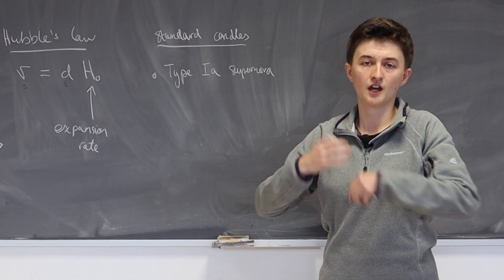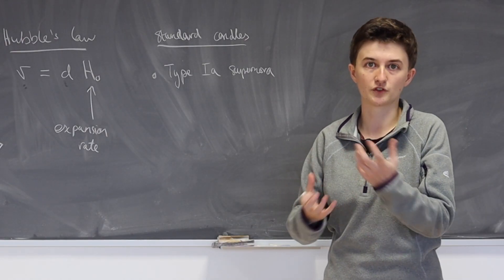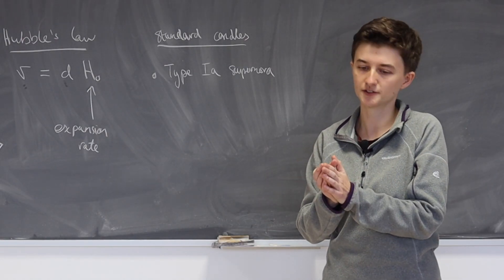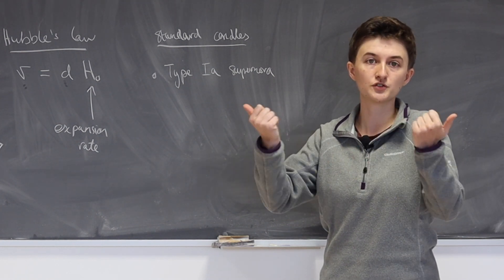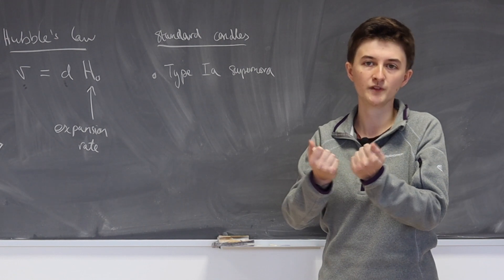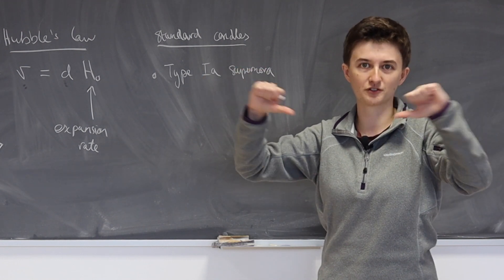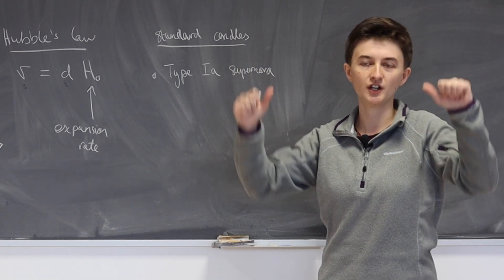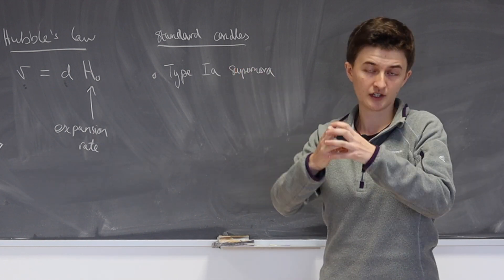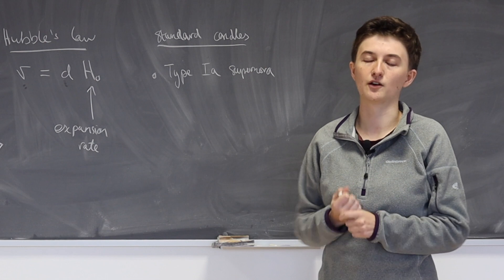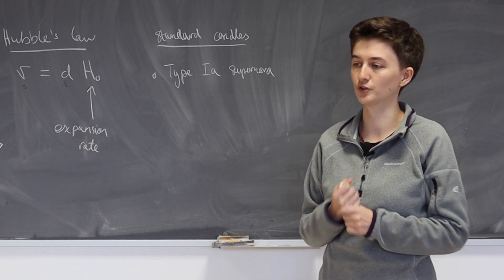eventually it will use up all of its fuel, also the hydrogen and helium inside it. And so the radiation pressure which pushes outwards due to the fusion reaction will weaken. And the gravitational attraction caused by the mass of the star itself will overcome this weakening radiation pressure. So the star essentially collapses in on itself and then explodes outwards. And that's a supernova explosion.